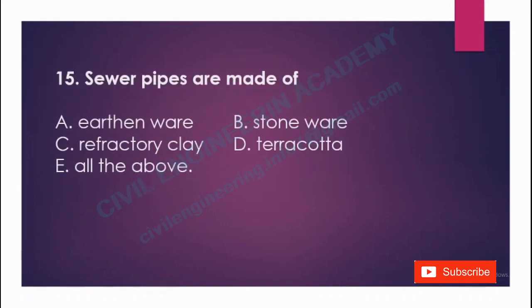Sewer pipes are made of: A) earthenware, B) stoneware, C) refractory clay, D) terracotta, E) all of the above. The answer is stoneware, option B.